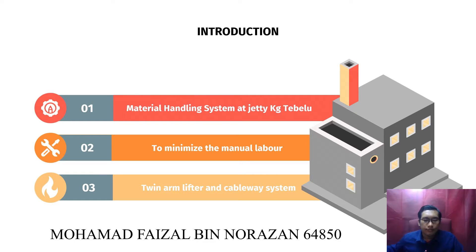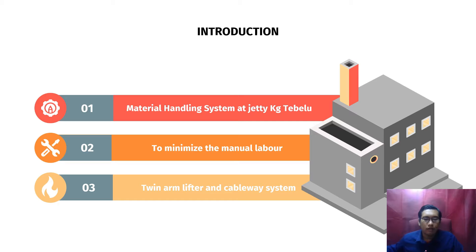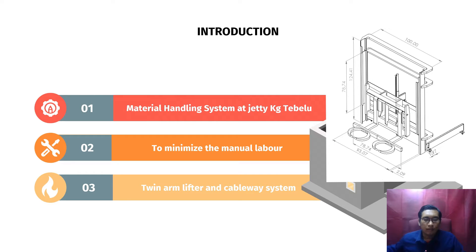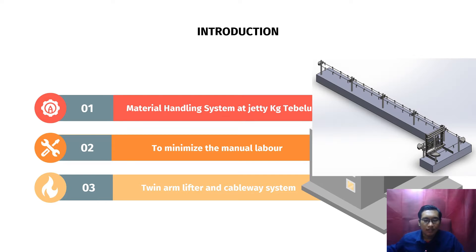Introduction: our group project is a design major hybrid system at UJT Kampung Tobolo to transport fish and shrimp from the jetty to the processing center. This project aims to minimize manual labor. Our group proposed a manual twin arm lifter to lift the basket from the boat to the jetty and from the jetty to the processing center. We implement the cableway system with semi-automated operation.